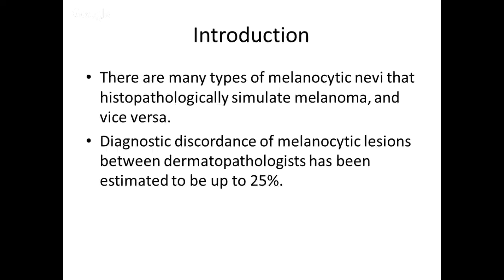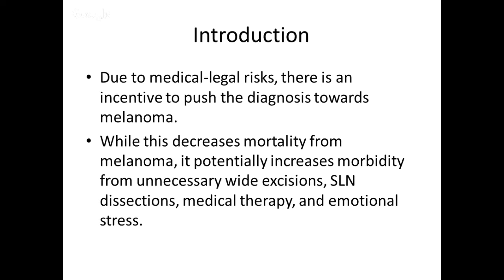There are many different types of melanocytic nevi that can histopathologically simulate melanoma and vice versa. Diagnostic discordance between dermatopathologists for melanocytic lesions has been estimated to be up to 25%, which is pretty surprising. And due to medical-legal risks, there's basically an incentive to push the diagnosis towards melanoma. While this may decrease mortality associated with melanoma, it can increase morbidity as well as costs for the patient.